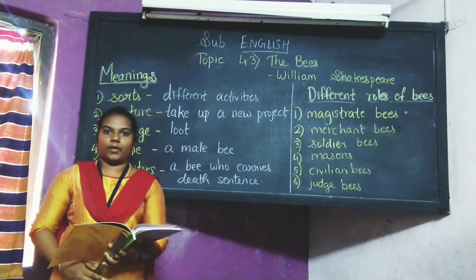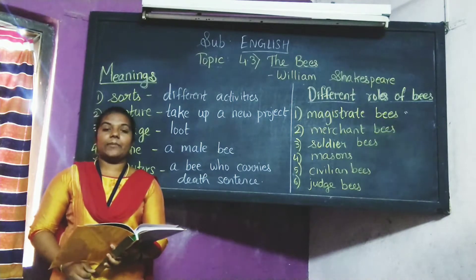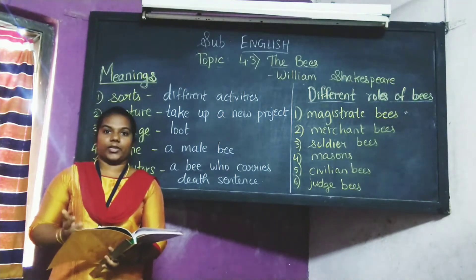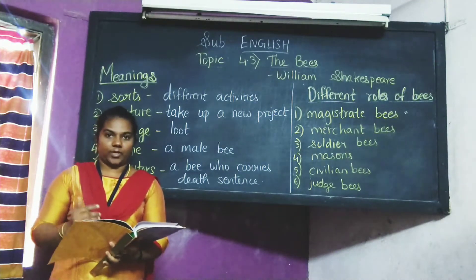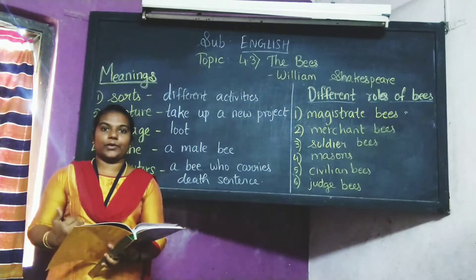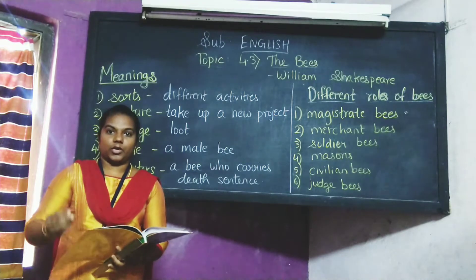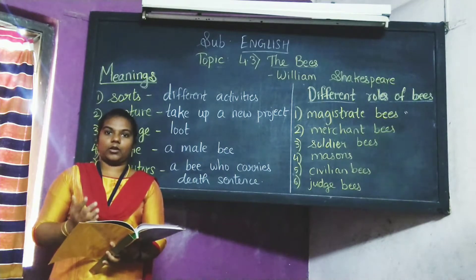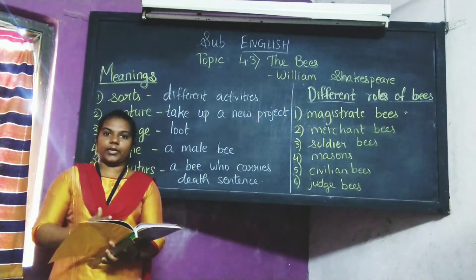Then there are civil citizens — that is, the civilian bees — who knead up the honey. Kneading means they mix the honey; they convert the nectar into honey. Whatever nectar is brought by the soldier bees or the merchant bees, those nectar are converted into honey by the civil citizens. It is a big procedure to convert from nectar to honey.